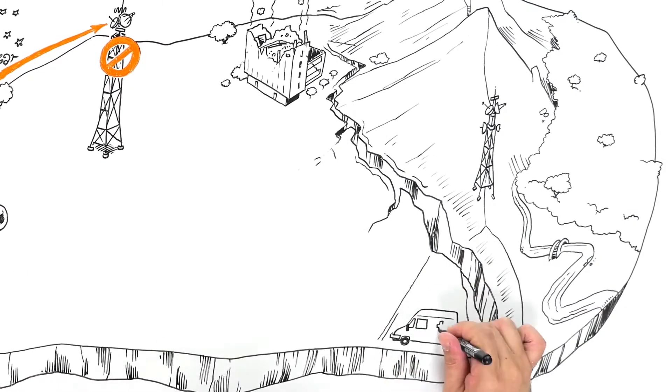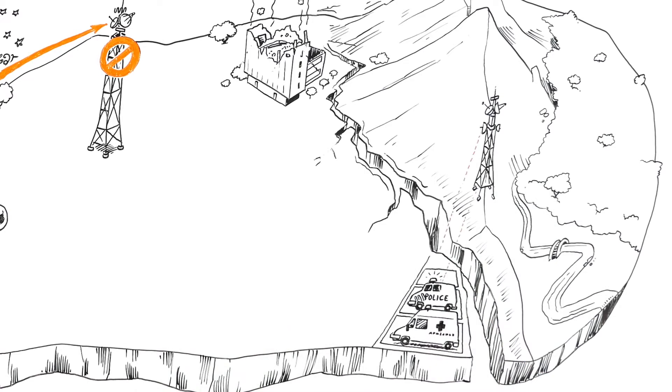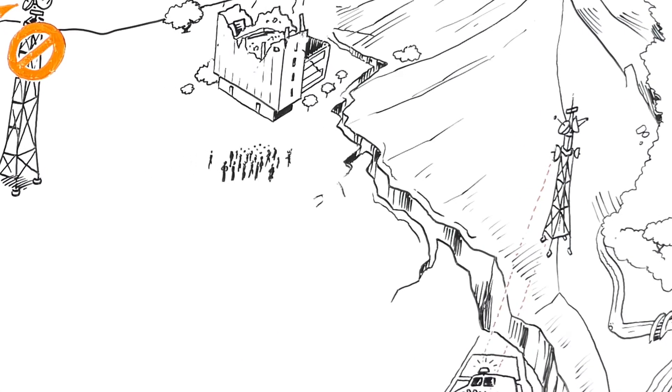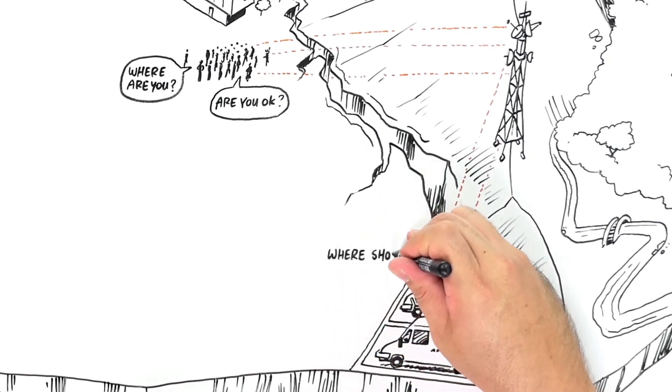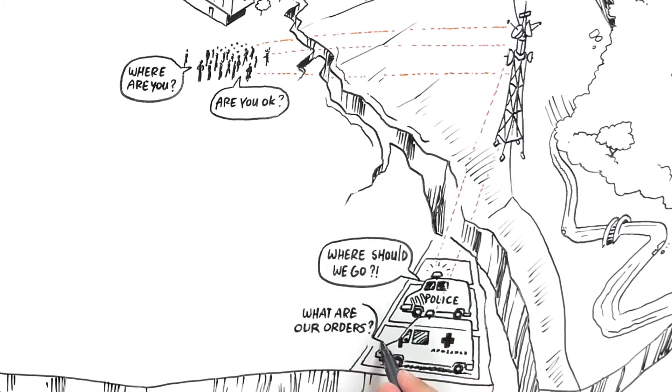At times like these, first responders and governments turn to the mobile network for support, while at the same time, people call their loved ones to make sure they're okay. This causes an overload, which makes it almost impossible for emergency services to respond immediately and accurately.